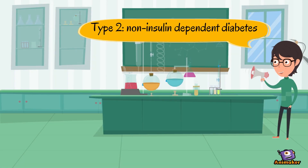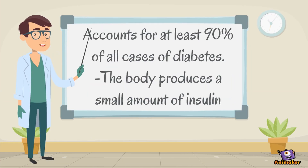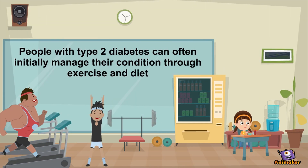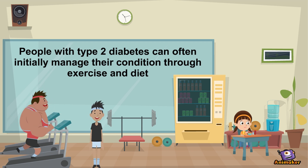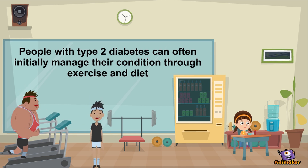Type 2, also known as non-insulin-dependent diabetes or adult onset diabetes, accounts for at least 90% of all cases of diabetes. In type 2 diabetes, the body produces a small amount of insulin. The diagnosis of type 2 diabetes can occur at any age. People with type 2 diabetes can often initially manage their condition through exercise and diet.